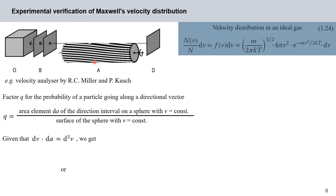By varying the rotation frequency of the cylinder we can measure the velocity distribution by measuring the intensity of incoming particles. The velocity distribution described in equation 1.24 accounts for particles with three degrees of freedom of translation. The function f(v) gives the probability that a velocity has any direction in space with magnitude between v and v + dv — it does not account for a single directional molecular beam.